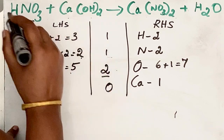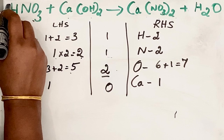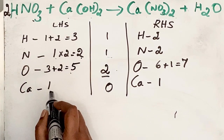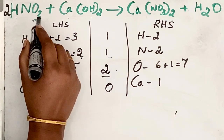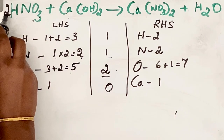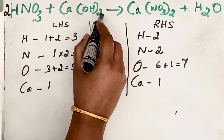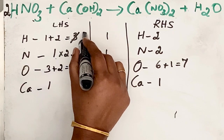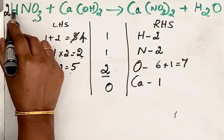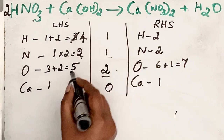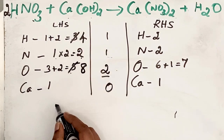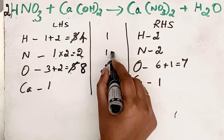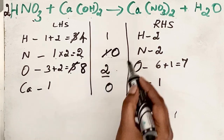In the left-hand side there is one nitrogen; in the right-hand side there are two. To make them equal, multiply by two — so it becomes two. We write this two as the coefficient in front of HNO3. While doing so, the hydrogen and oxygen atom counts also change: hydrogen becomes two plus two equals four, so update three to four. Oxygen: three times two gives six, plus two equals eight, so update five to eight. Nitrogen difference is now two minus two equals zero.